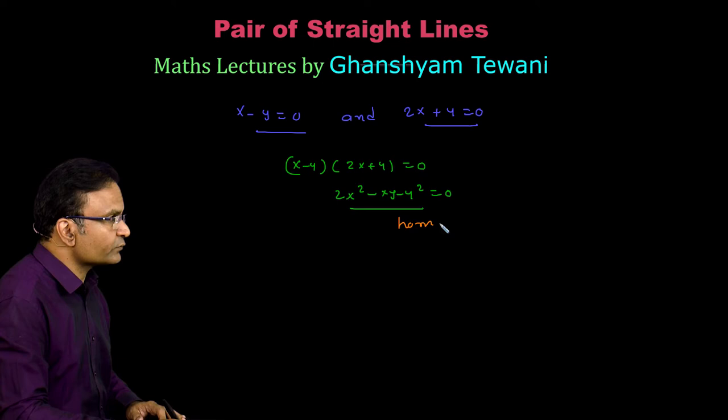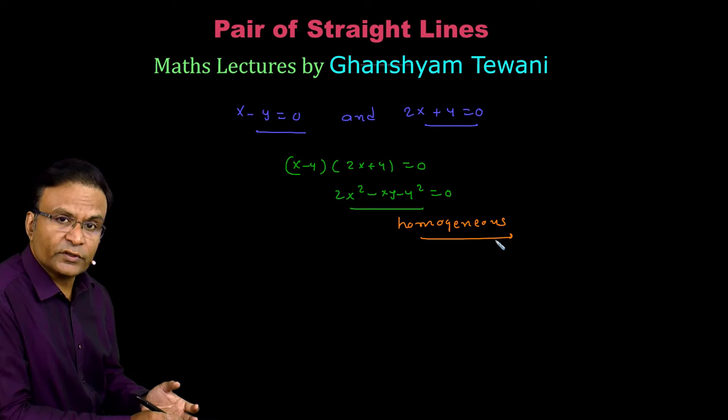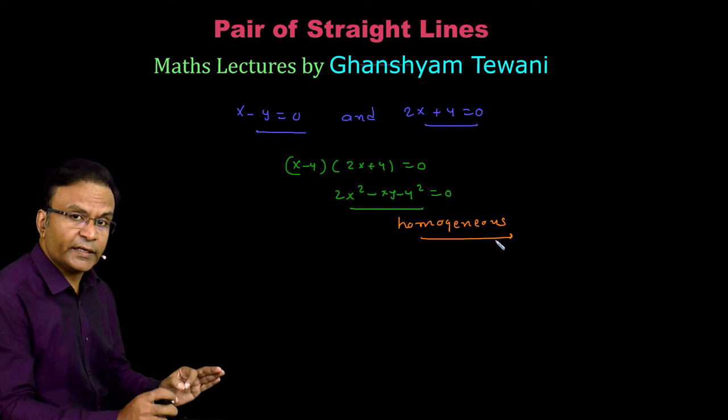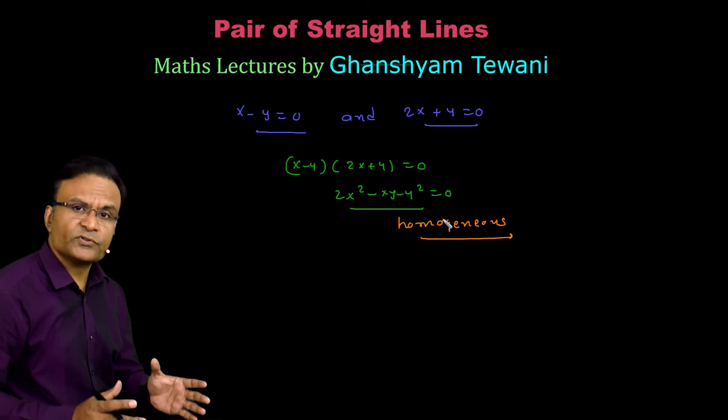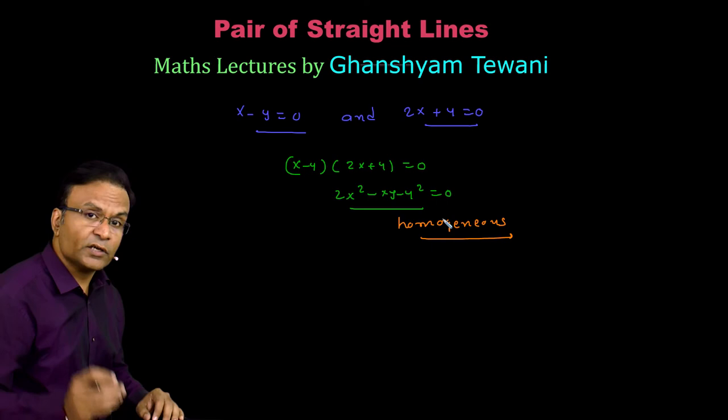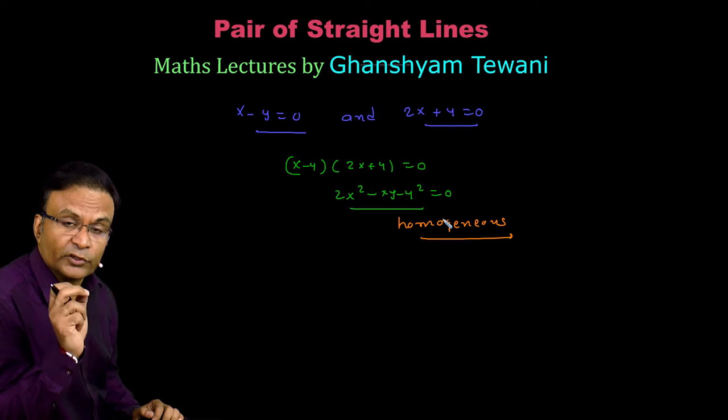What do we mean by a homogeneous equation? It is an equation in which each term has the same degree or power. This is a homogeneous equation which is a pair of straight lines passing through the origin. In fact, a pair of straight lines passing through the origin is the only conic section which has a homogeneous equation. Remember this fact — we will use it in a concept called homogenization later on.